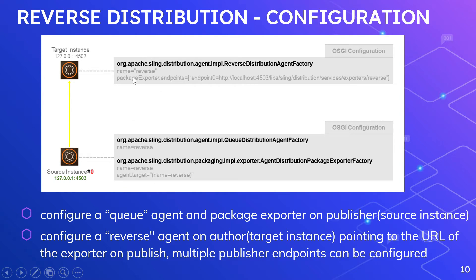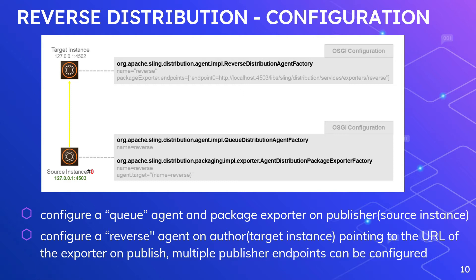If you see the configuration for the target instance — that means author — we are configuring a reverse distribution agent factory. The name is 'reverse', and you can provide whatever name you want. The important configuration is package exporter dot endpoints. Endpoint zero is pointing to a publisher running on 4503, and the name here is the agent distribution package exporter configured in publisher — the same name should be used here. You can configure multiple endpoints, one for each publisher. Based on this configuration, whenever there is reverse content available, author will pull that content based on the endpoint configuration.